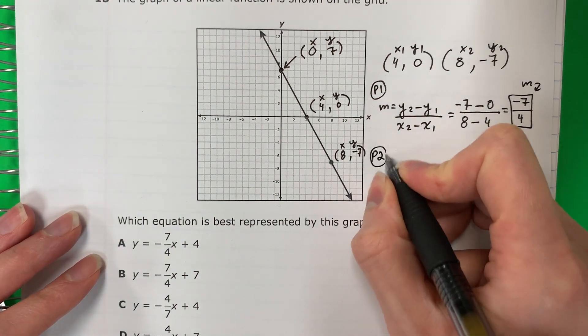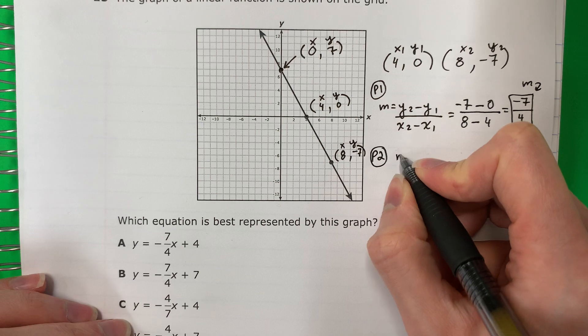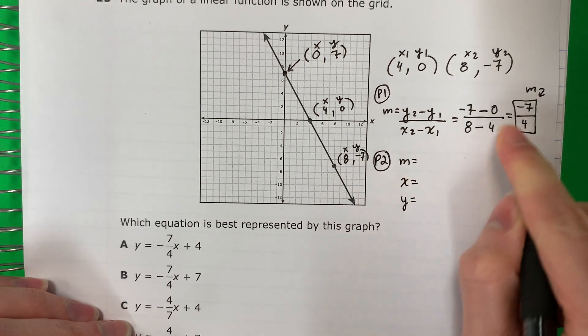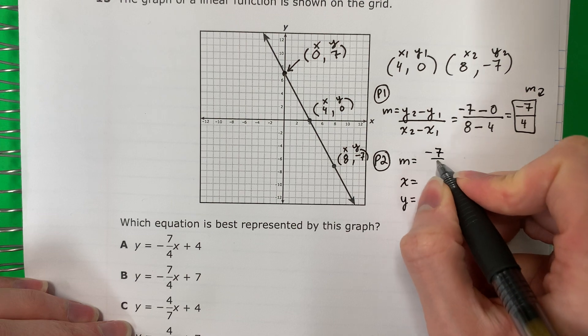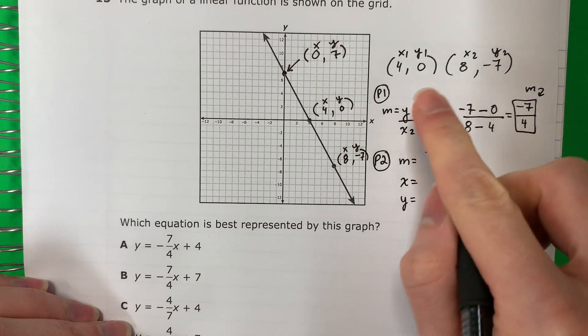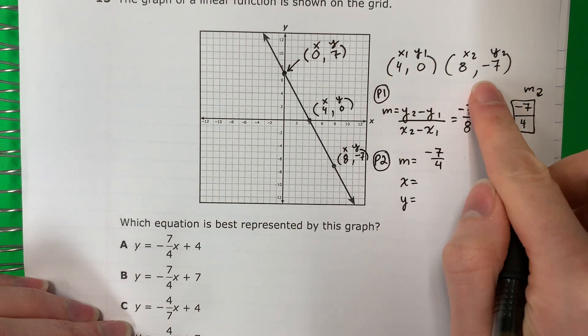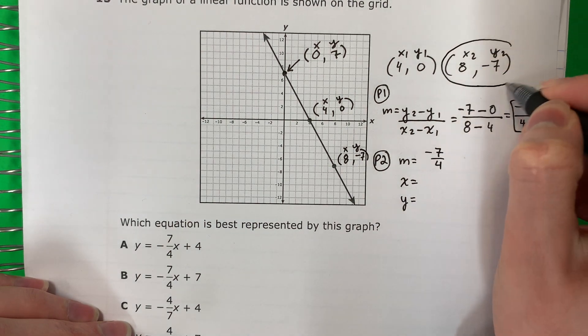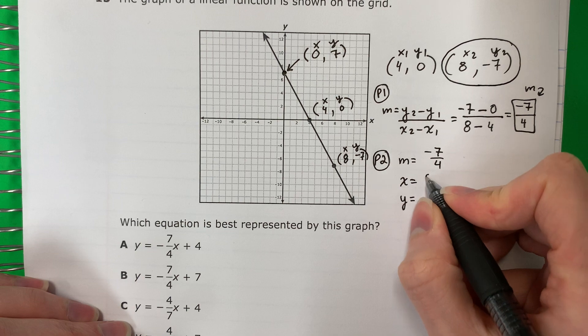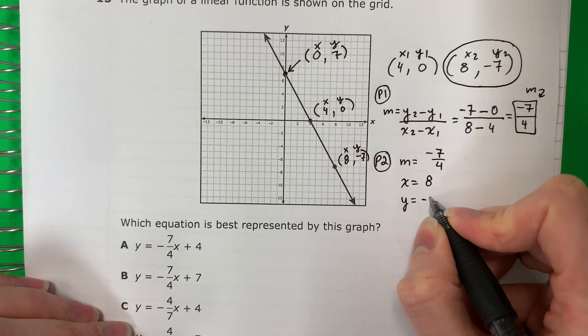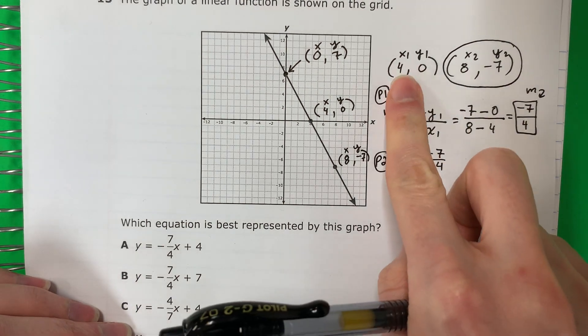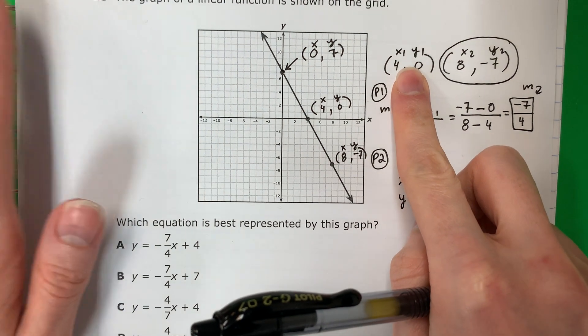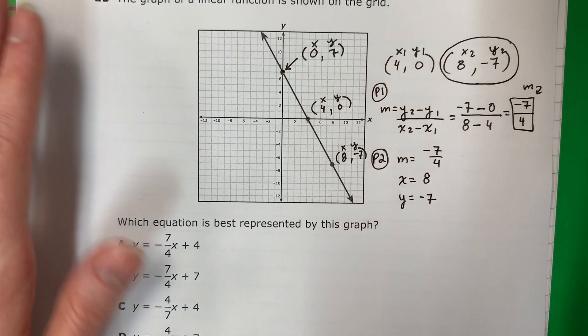So I have M. Part two is I need to find B. So I'm going to do M equals X equals Y equals. M is negative seven fourths. X is, you're going to pick one. It doesn't matter which one. I'm going to go ahead and pick this one. X is eight and Y negative seven. If you pick this one, you will still have the same answer.